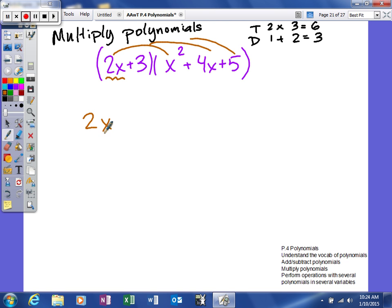X times X is X to the third. Two times four X, or two X times four X, we're going to multiply our coefficients to get eight. When you multiply X times X, you add the exponents. And two X times five, two times five will give me ten. I don't have anything to combine that X with, so I'm finished there.